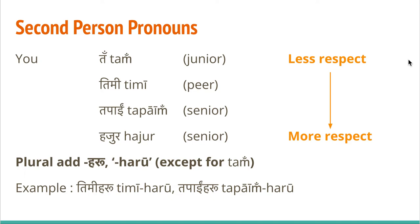'Timi' is the most common way to say you to someone who is your age or your friend. 'Tapai' and 'Hajur' are for people you respect. In order to make plural, except for ton which I recommend you don't use, all other pronouns you can add 'haru' to make it plural — timi haru and tapai haru.